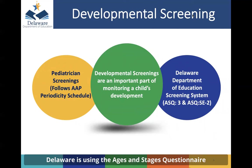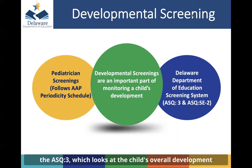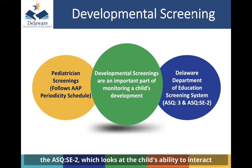Delaware is using the Ages and Stages Questionnaire, the ASQ-3, which looks at the child's overall development, and the Ages and Stages Social and Emotional screening, the ASQ:SE-2, which looks at the child's ability to interact with others, as their developmental screening tools.